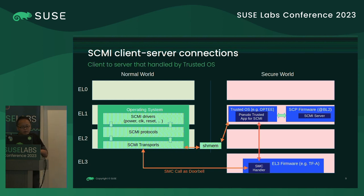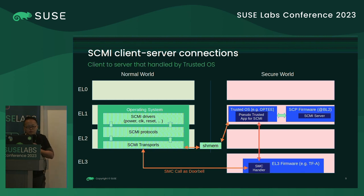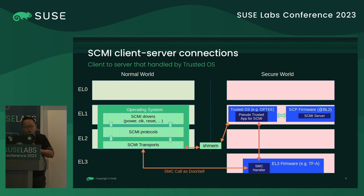Now let's look at what kinds of connections an SCMI client and server can have. In one scenario, the SCMI server runs in the secure world — it could run on a trusted OS such as OP-TEE or the SCP firmware, depending on your design. When the normal world delivers an SCMI request, it populates data to shared memory first, then uses an SMC call as the doorbell.